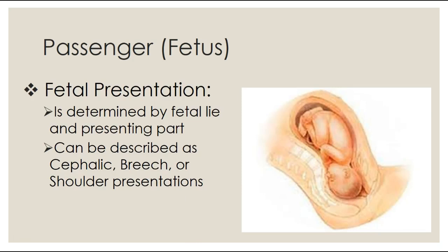Fetal presentation is determined by fetal lie and the presenting part. We can describe fetal presentation as either cephalic (head down), breech (butt down), or shoulder presentation (which means the baby is transverse). The fetal head presents in about 97% of births. In the other 3%, the baby presents in a breech manner. Breech and shoulder presentations are considered malpresentations, meaning labor is not going to proceed as expected — we want babies to present in a cephalic manner.